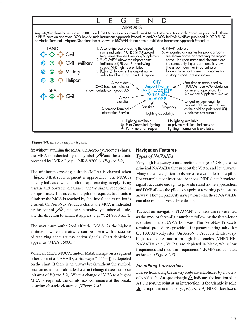On AeroNav Products charts, the MRA altitude is indicated by the symbol preceded by MRA, for example MRA 9,300. The minimum crossing altitude, MCA, is charted when a higher MEA route segment is approached. The MCA is usually indicated when a pilot is approaching steeply rising terrain and obstacle clearance and/or signal reception is compromised. In this case, the pilot is required to initiate a climb so the MCA is reached by the time the intersection is crossed. On AeroNav Products charts, the MCA is indicated by the symbol, the Victor Airway number, altitude, and the direction to which it applies, for example V-24 8000 SE.